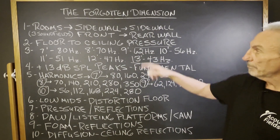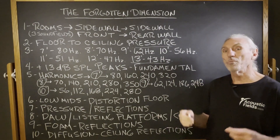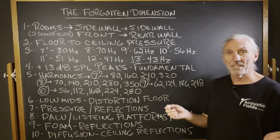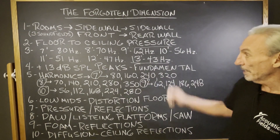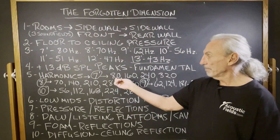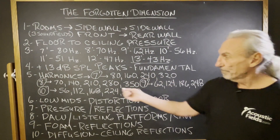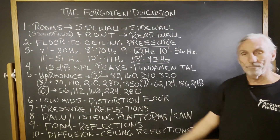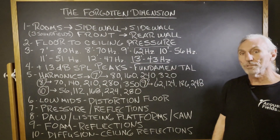We've seen peaks in that floor to ceiling dimension of 13 dB — you can't have that. That's way too much energy. You can't manage it electronically. It's going to ruin the presentation value of everything, and you definitely can't record in it when you have those kind of peaks. And then we have all the harmonics associated with it. At 7 foot we've got 80, 160, 240, 320. At 8 foot, we got 70, 140. You can see the whole impact that that kind of pressure level, floor to ceiling, produces.